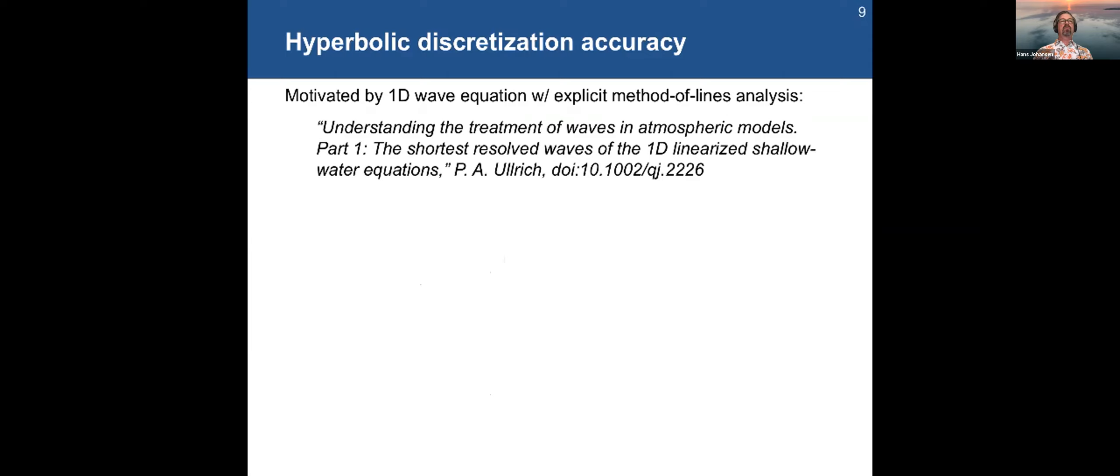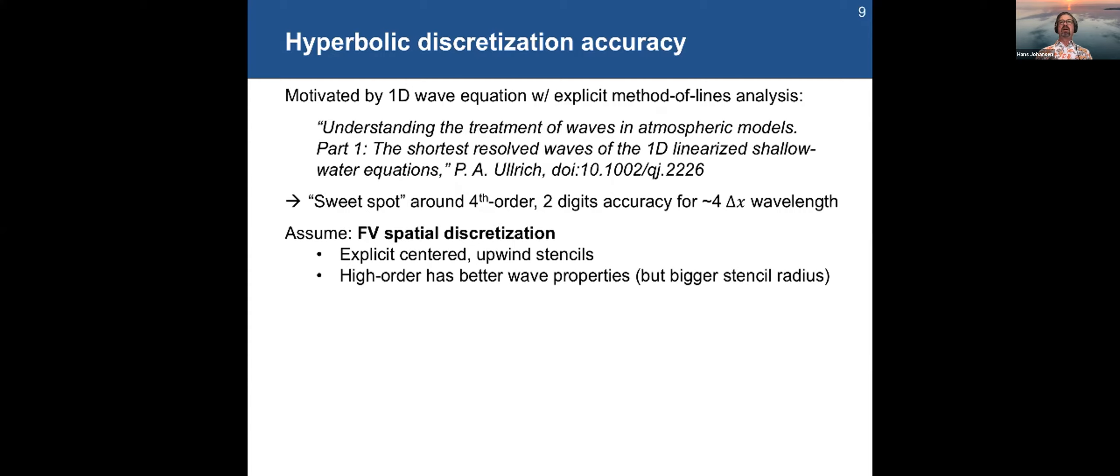This is a colleague of mine, Paul Ulrich, who did a great analysis of just this kind of 1D linearized shallow water problems. And he found that the sweet spot for explicit methods is around fourth order accurate. It doesn't matter if you're talking spectral or DG or whatever, and in terms of time integrators, you know, RK4 or strong stability preserving, they were all in this ballpark of getting about two digits of accuracy for every and the shortest wavelength that they could actually resolve was about a four delta X mode. So if I go back to my finite volume spatial discretizations, and again, you can use staggered, upwind, center differences, it doesn't matter. Higher order generally has better wave properties, but the communication and bandwidth are a problem there in terms of bigger stencil radius. And I'm not going to talk about this, but I'm actually really excited about compact implicit stencils, which only require linear solves. You can layer it quite nicely on top of an implicit solver already. And that'll be a future subject to discuss.